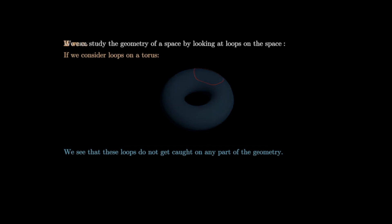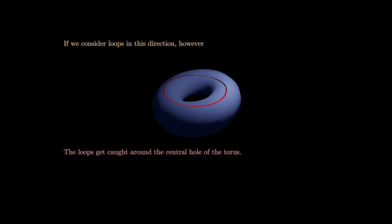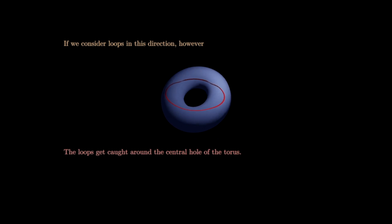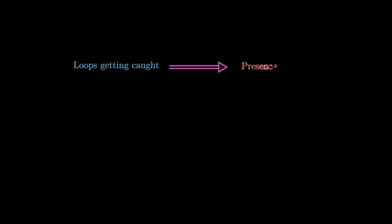But if we consider loops in another direction, the loops get caught around the central hole — we can't contract or expand them indefinitely; they're confined by this hole. I'd like you to tell me in the comments if you can find the other hole on the torus which confines loops and prevents them from being contracted. What we see is that loops getting caught tells us about the presence of holes in the geometry, and so we can use loops to understand and measure a geometric object.